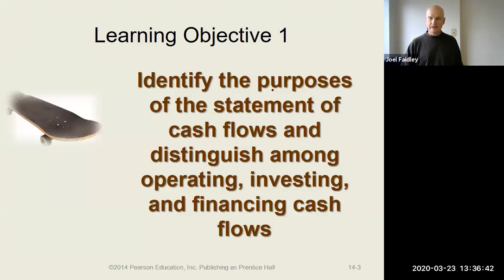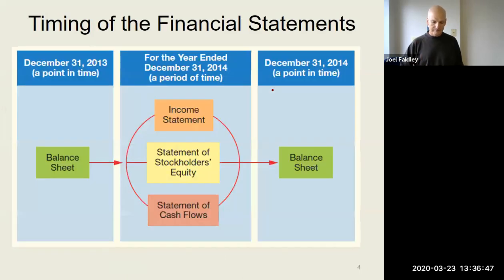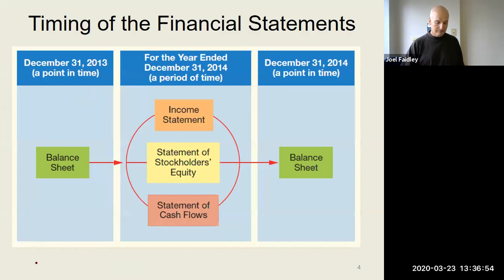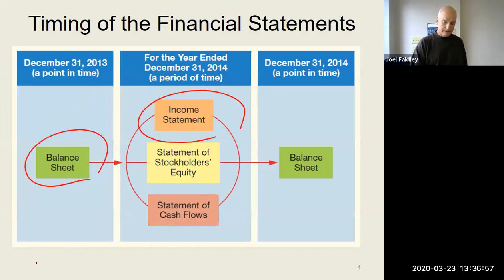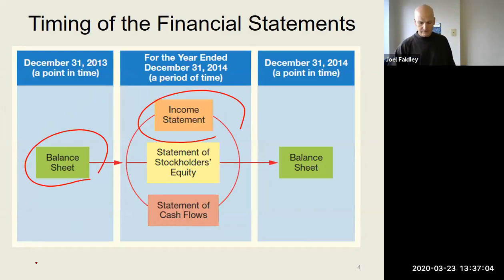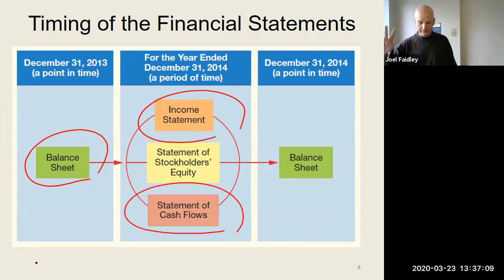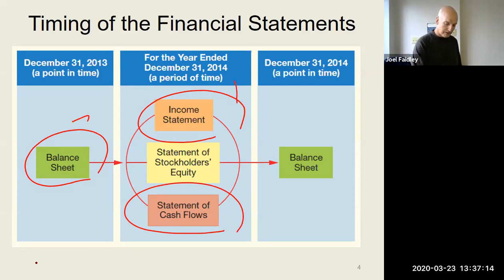Readers of the statement of cash flows want to know what happened to cash. The three big statements that companies use are the balance sheet, the income statement, and the statement of cash flows. Some will ask about the statement of stockholders' equity — I would classify that as four, but that's just me. So really: income statement is one, balance sheet is two, statement of cash flows is three.